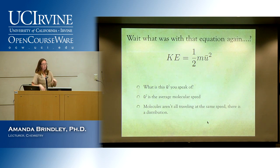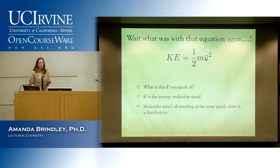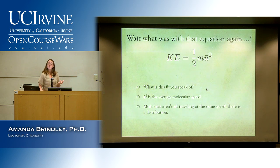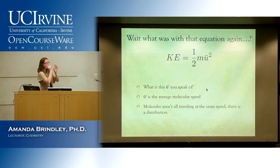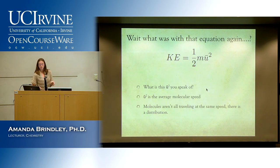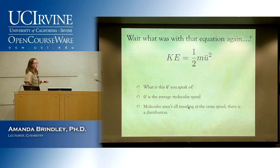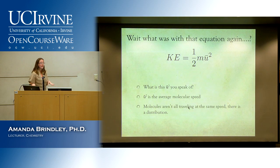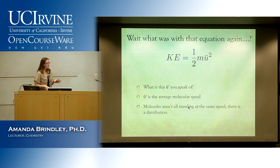Instead of simple velocity V, we use u_rms — the root mean square speed — which is the average molecular speed across all molecules. You can't pinpoint one molecule's speed as representative; there's always a distribution. You use u_rms just like velocity — I'll either give it to you or have you calculate it with an equation we'll learn shortly.